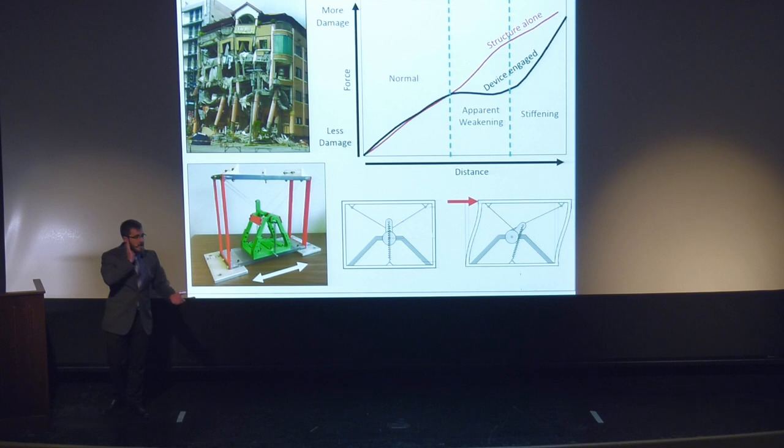When we engage our negative stiffness device, which is here in the middle, the behavior changes. Any motion across the structure is transferred into the device by the cables, which rotate the lever arms, which stretch or contract the springs.